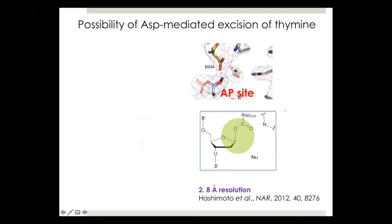They also reported another structure showing continuous electron density between the AP site and the catalytic carboxylate. Based on this observation, they proposed a direct covalent attack of aspartate on the AP site to generate a covalent bond. The problem was that the 2.8 Ångström resolution of that structure makes it very difficult to accurately determine the nature of that bond.